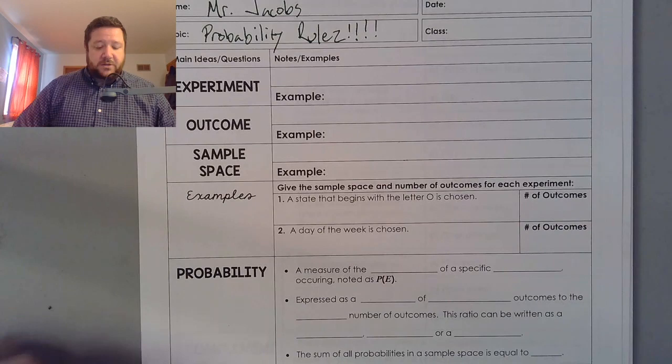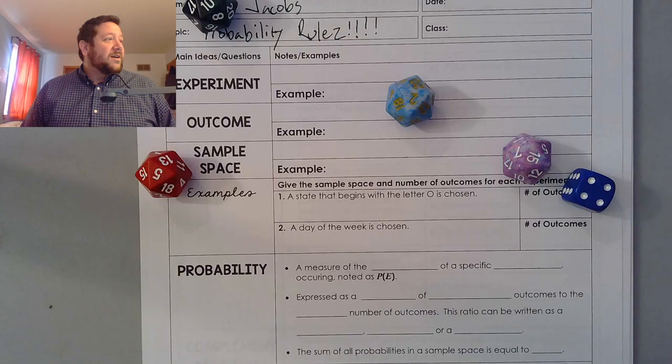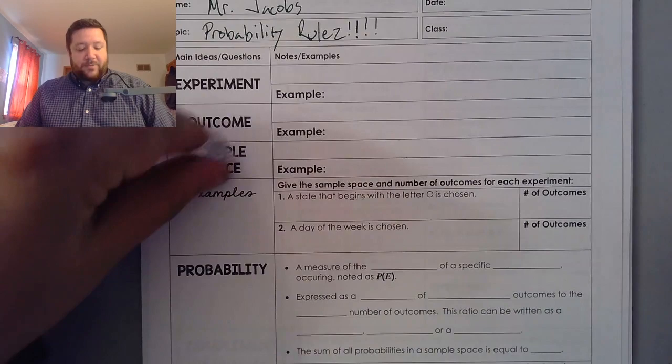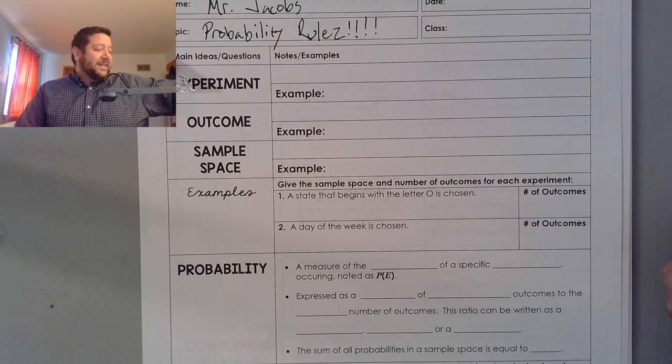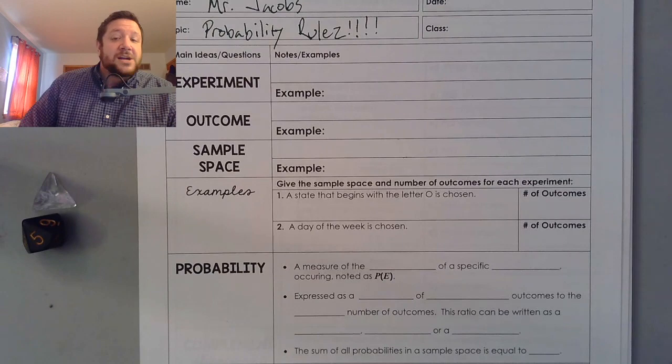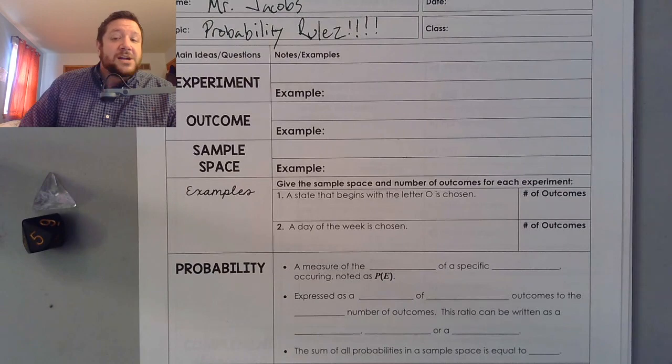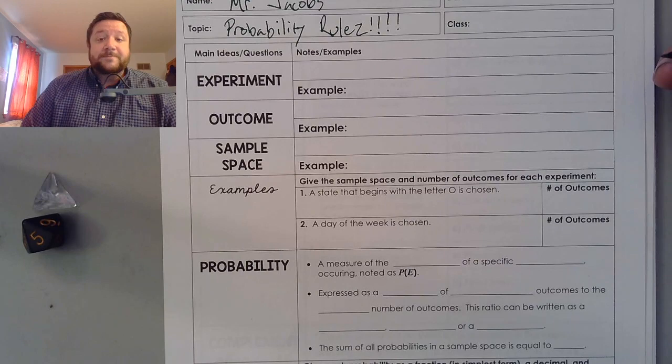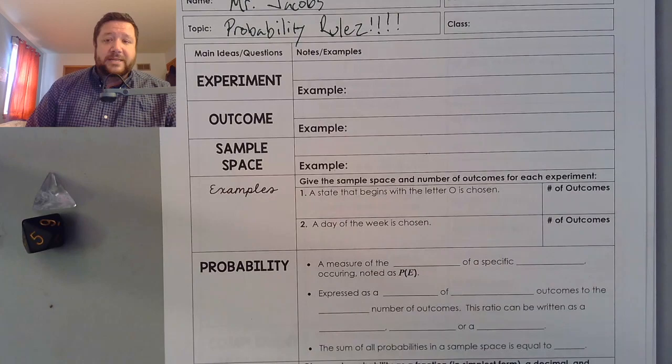Behind that, you should have this packet right here. And the first page should talk about experiment, outcome, and sample space. So we are talking about one of my favorite topics, probability. So the question is, what are the chances that we just got these specific dice rolls?